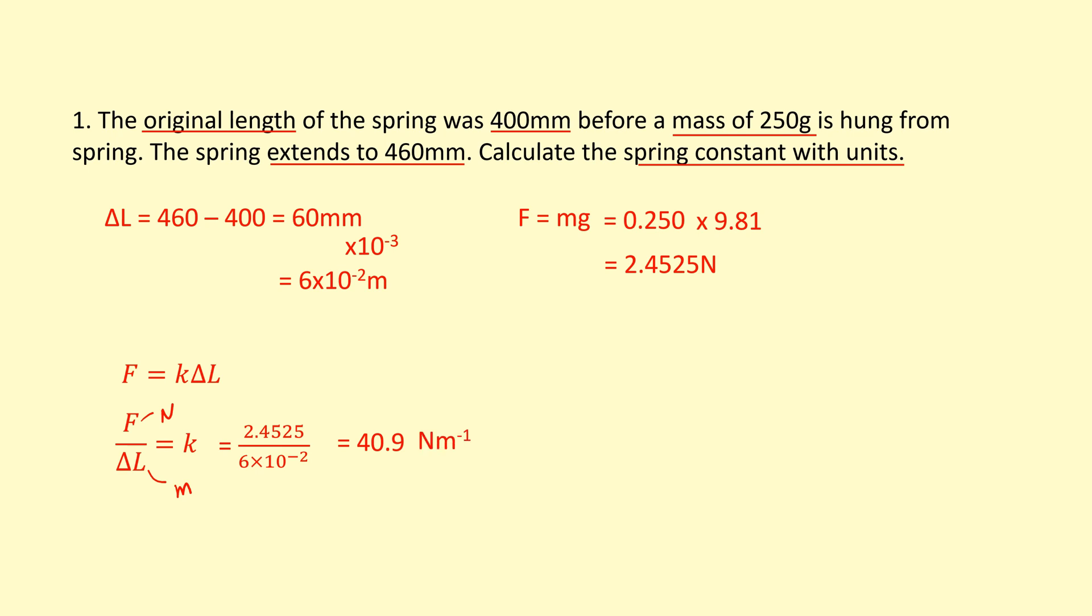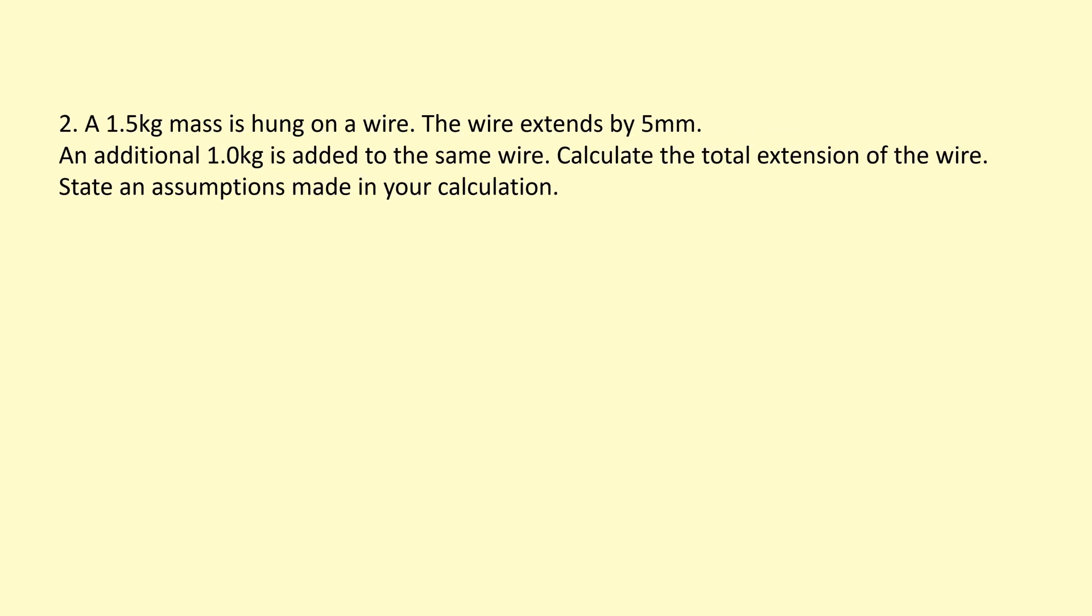In this question, I've got a 1.5 kilogram mass which is hung on a wire. The wire extends by 5 millimeters. An additional 1 kilogram is added to the same wire. Calculate the total extension of the wire. State the assumptions made in your calculation. So first, I'm going to start by drawing a picture here. So what's going on?